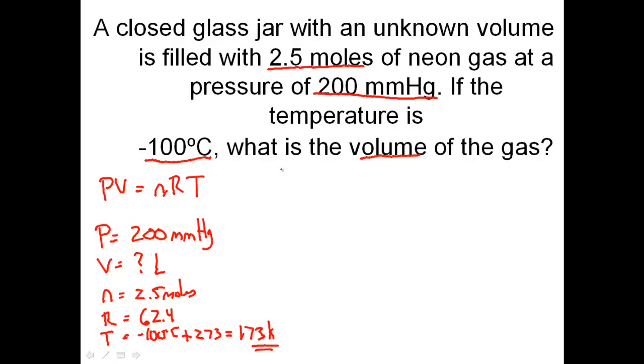Let's plug and chug. We have PV equals NRT. When I start plugging these in, we have 200 millimeters of mercury, volume is what we're solving for, the number of moles was 2.5, the R value I chose was 62.4, and the temperature is 173 Kelvins.